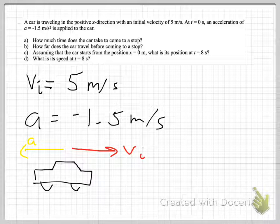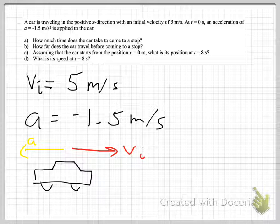The first thing I did was write down the information that I know — the symbol and the number. I'm a big believer in solving things symbolically, but it's handy to have the number available at the end for a numerical solution. The initial velocity is 5 meters per second in the positive direction, and the acceleration is negative 1.5 meters per second squared.